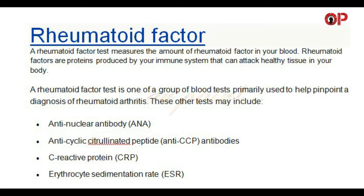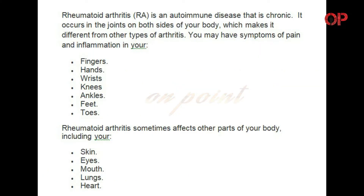Other related tests may include anti-nuclear antibody (ANA), anti-cyclic citrullinated peptide (anti-CCP) antibodies, C-reactive protein (CRP), and erythrocyte sedimentation rate (ESR). Rheumatoid arthritis (RA) is an autoimmune disease that is chronic.